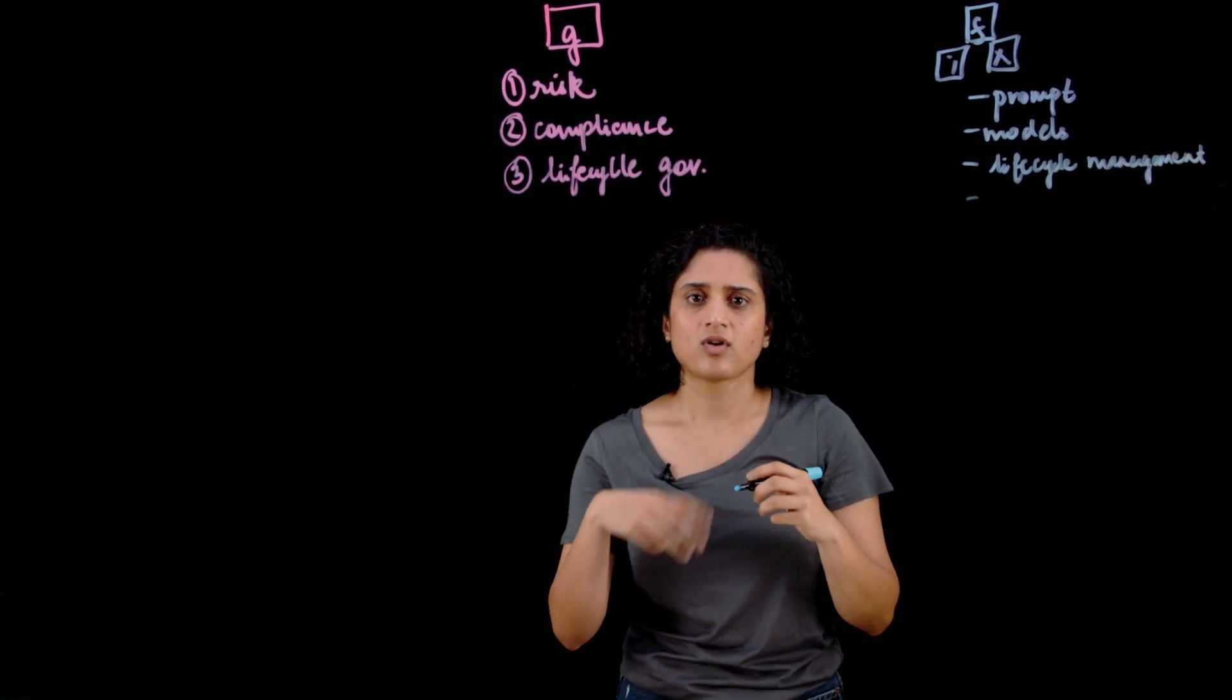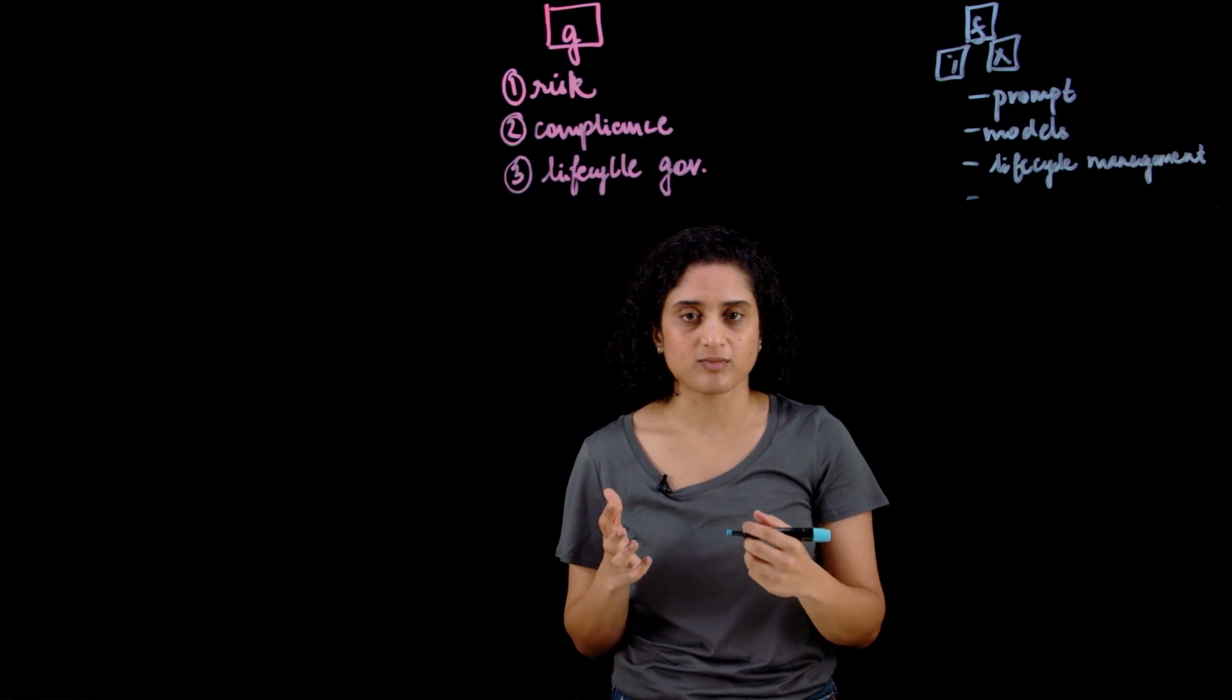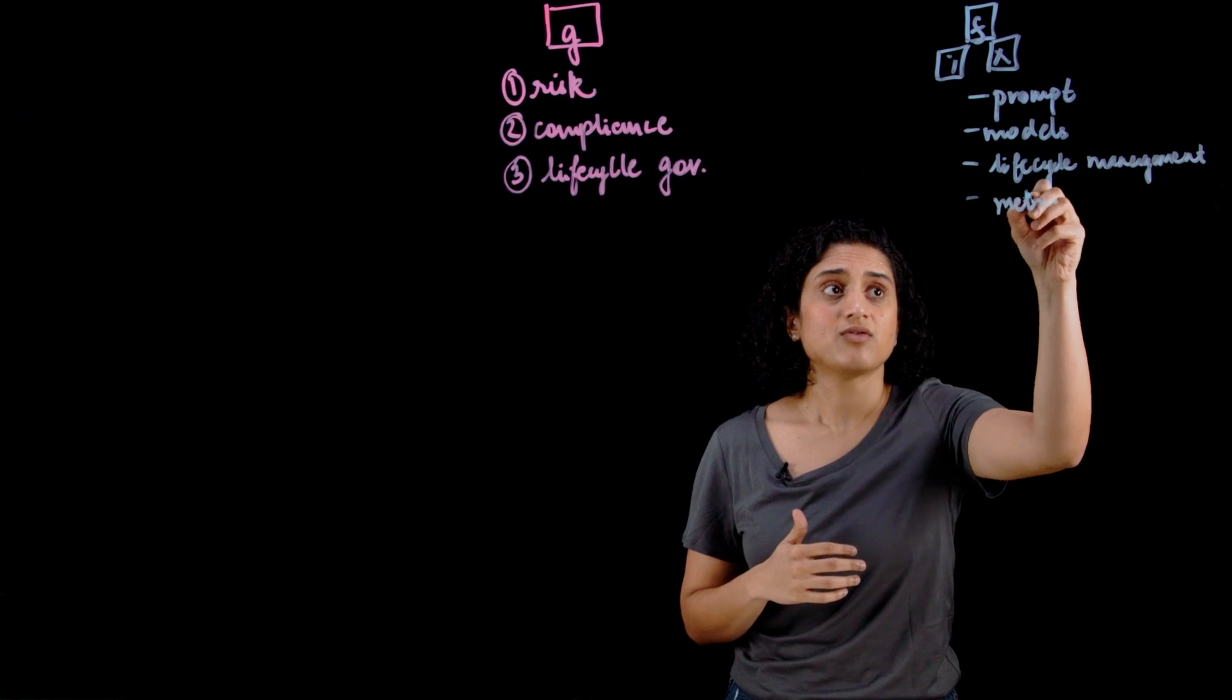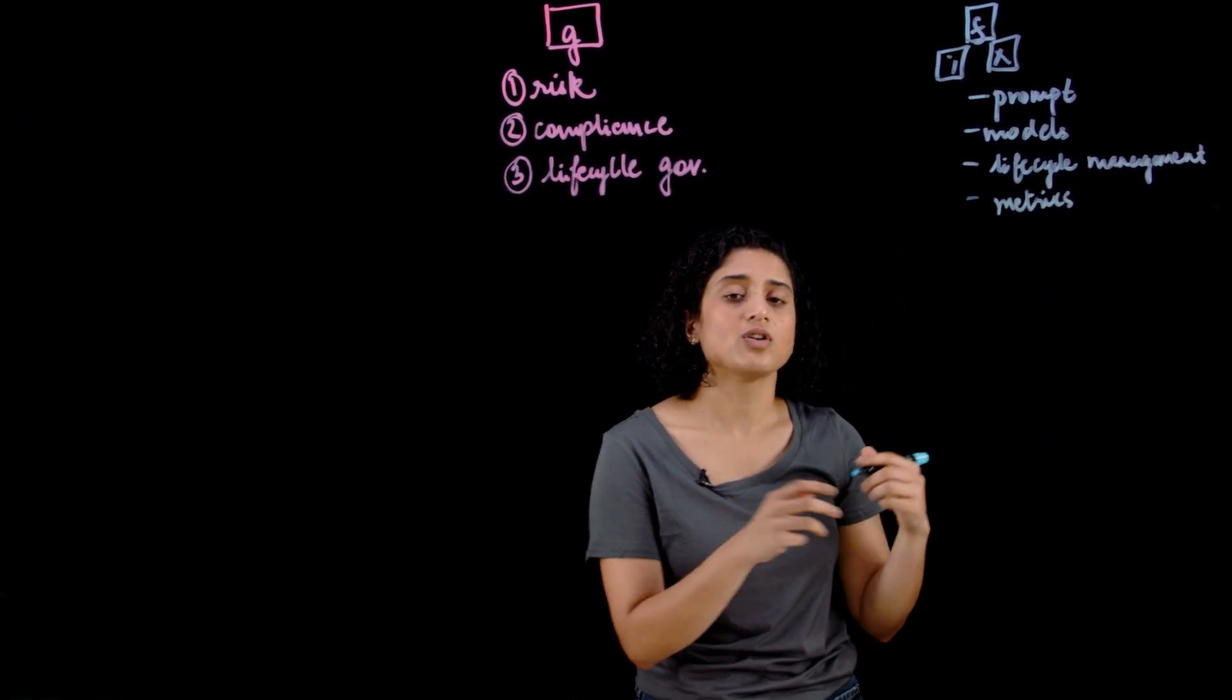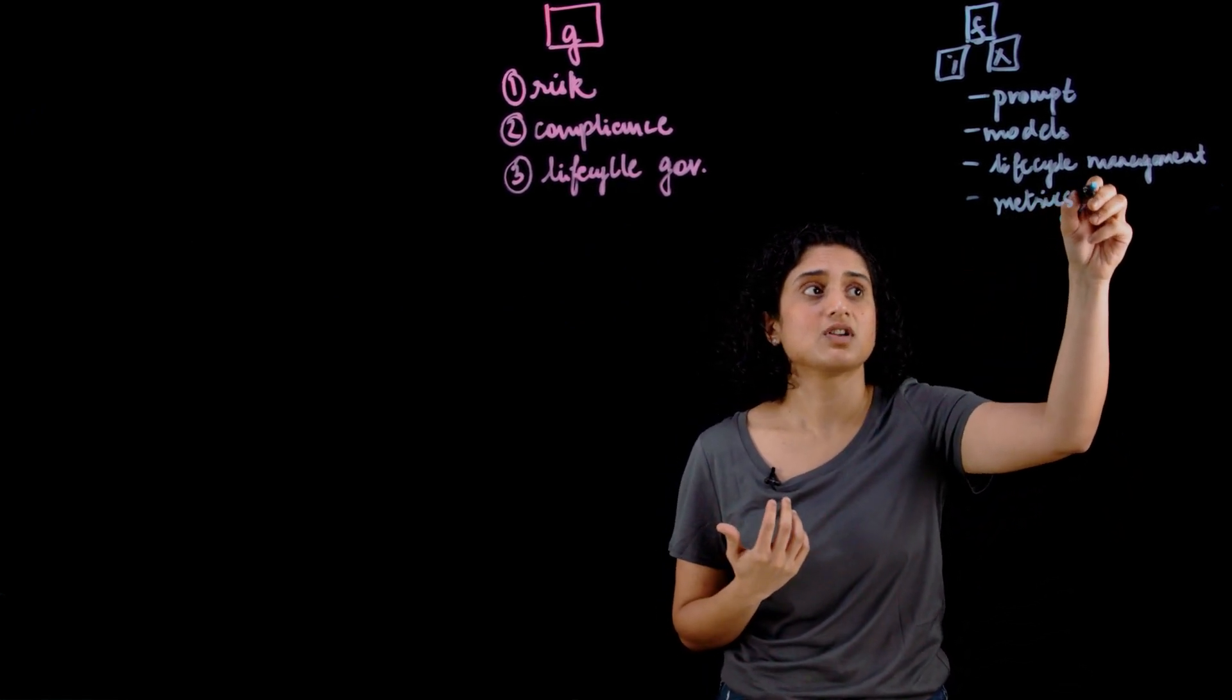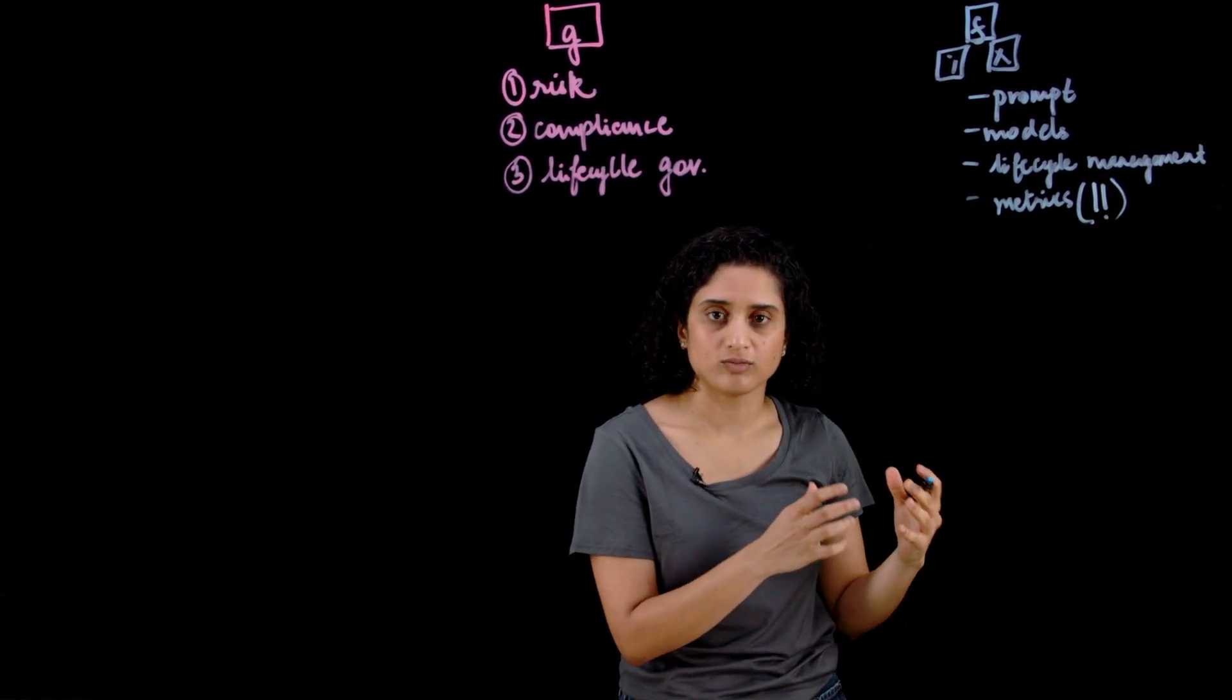The other thing when you have these different models and prompts working, you want to be able to govern these different prompts. You want to make sure that you have the right metrics in place. And the metrics can vary based on your different use cases and also the different rules and acts in a particular state and country. The metrics is one of the key features that a Generative AI governance platform should have.